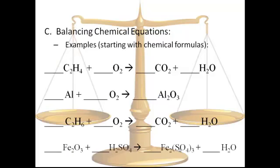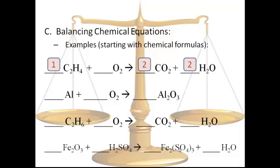A couple more examples. For C2H4, start with C's: two on the left, one on the right — double it up. H's: four on the left, two on the right — double up the H's on the right. Now the O's, which are always the trickiest. On the left, two O's; on the right, be careful — you actually have four O's from the doubled O2, plus two more from the doubled water, giving six O's total. Triple the O2 on the left to get six. Double-check: two C's on both sides, four H's on both sides, six O's on both sides.